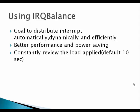IRQ balance automatically balances interrupts among available CPUs, leading to better performance and power saving. It constantly reviews the loads applied by IRQs and rebalances accordingly after every 10 seconds. You can override these parameters but generally people don't touch them. One major benefit is achieving cache hits — for example, if a particular IRQ is being handled by CPU 0, next time the interrupt occurs it may be handled by CPU 0 again for better cache performance.